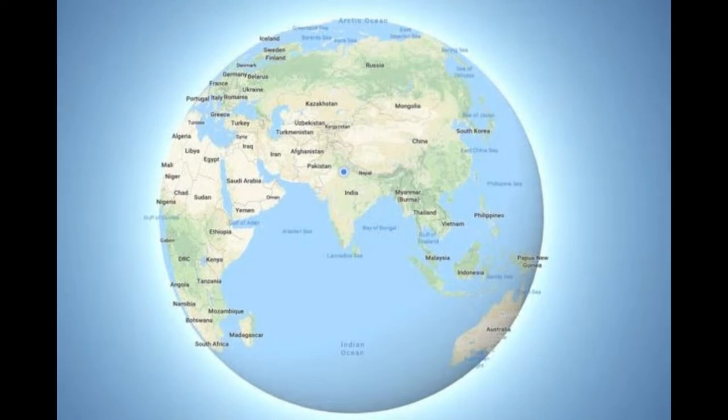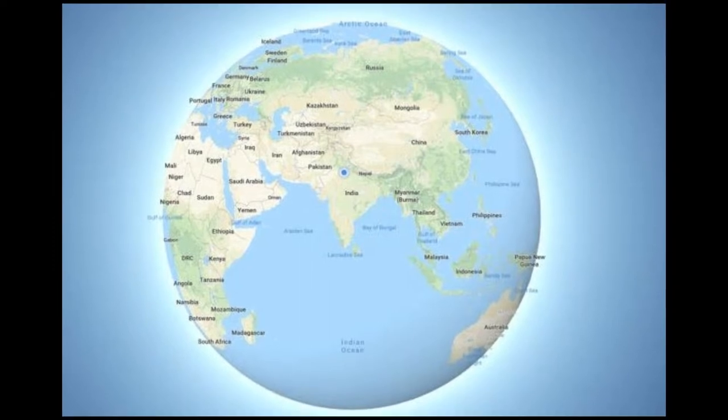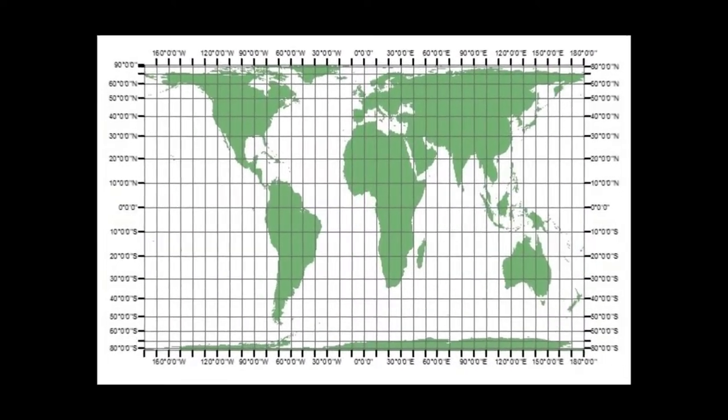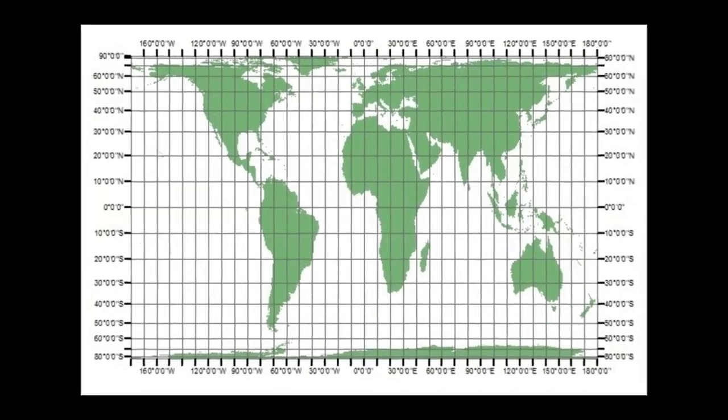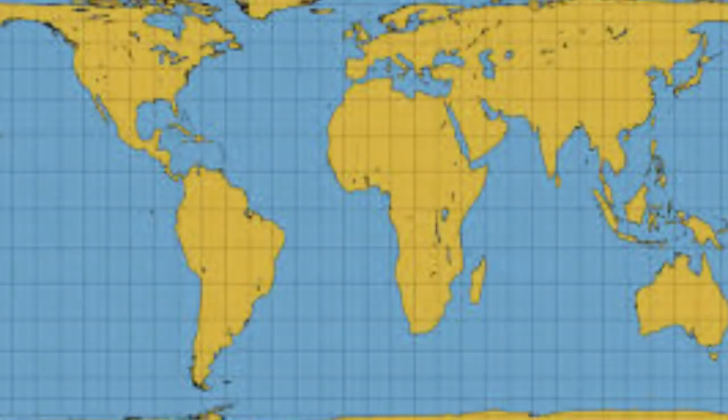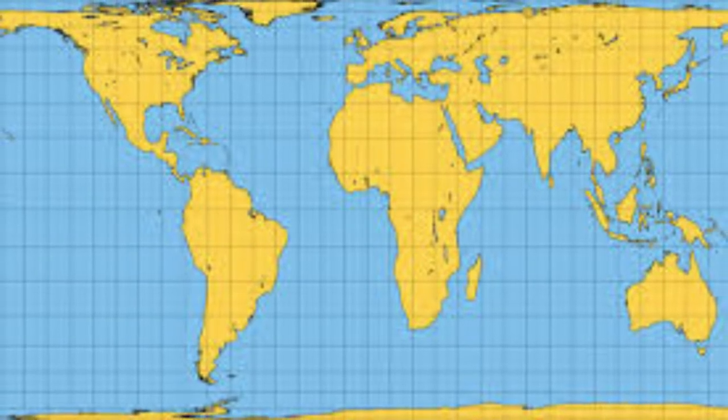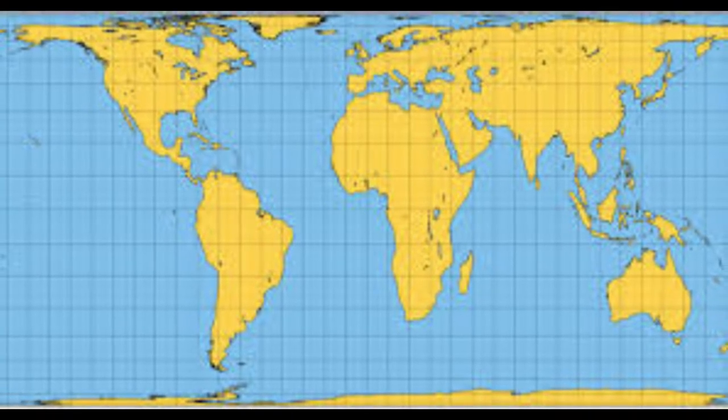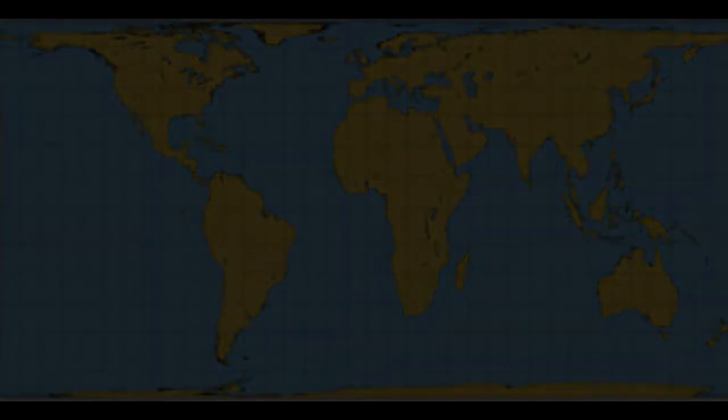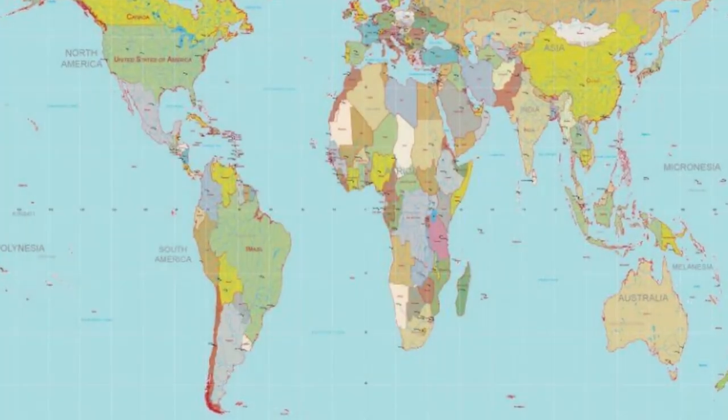The second map projection is Gall-Peters. The biggest criticism for the skewed Mercator projection came in 1973 from German filmmaker and journalist Arno Peters. Peters argued that by enlarging Europe and North America, Mercator maps were giving white nations a sense of supremacy over non-white nations. His solution: an equal-area projection that would ensure the correct size of countries relative to each other.